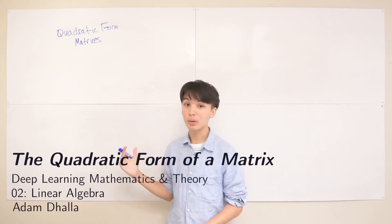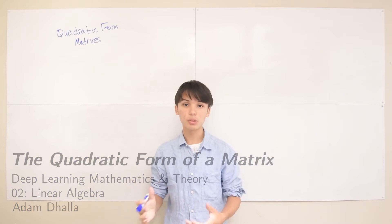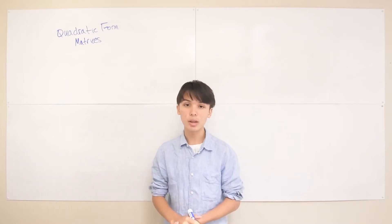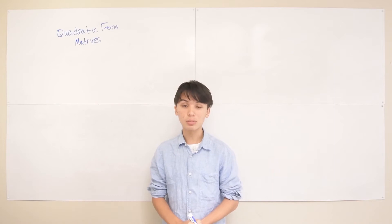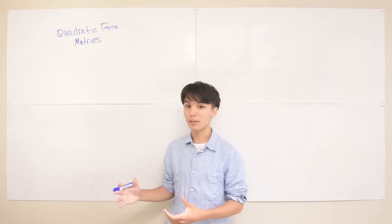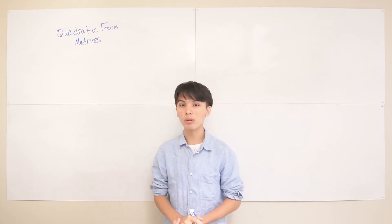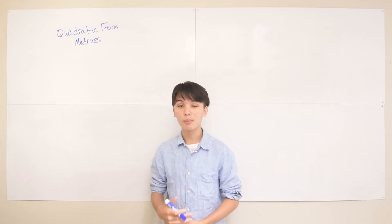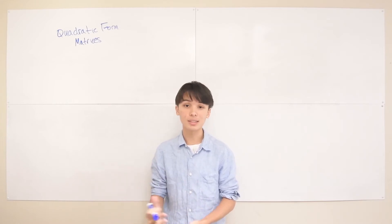In this lecture, I'm going to be talking about how we can represent polynomials in quadratic form with a really simple matrix-vector expression. This goes with chapter 2.7 of the Deep Learning textbook, but it's not really talked about too much in that chapter. I just wanted to give a primer on this topic because it's going to be really important in our understanding of positive semi-definite and positive definite matrices in the next lecture.